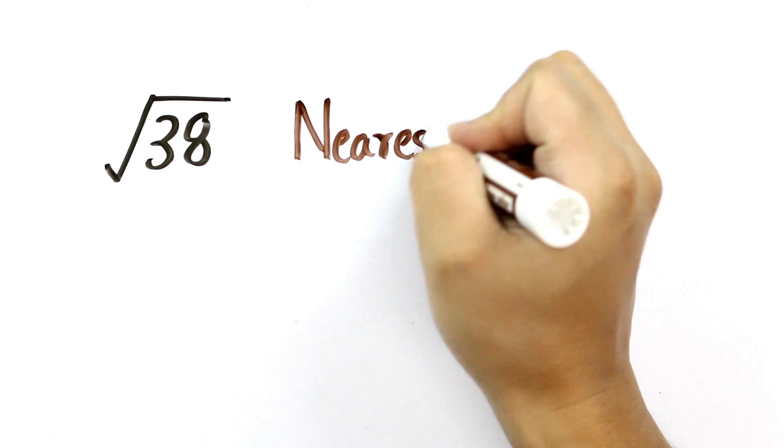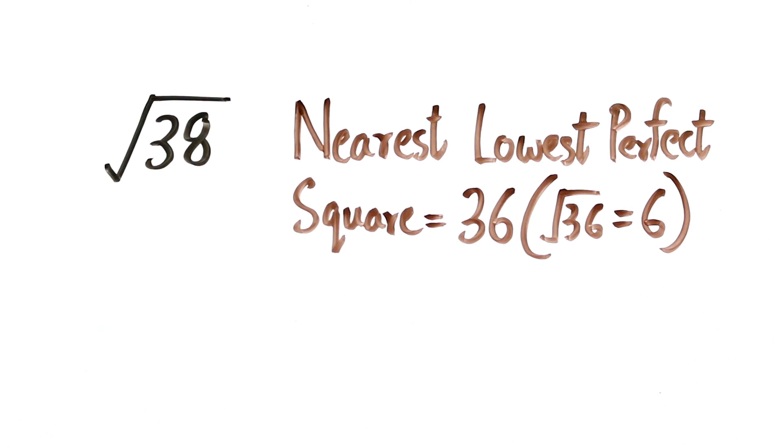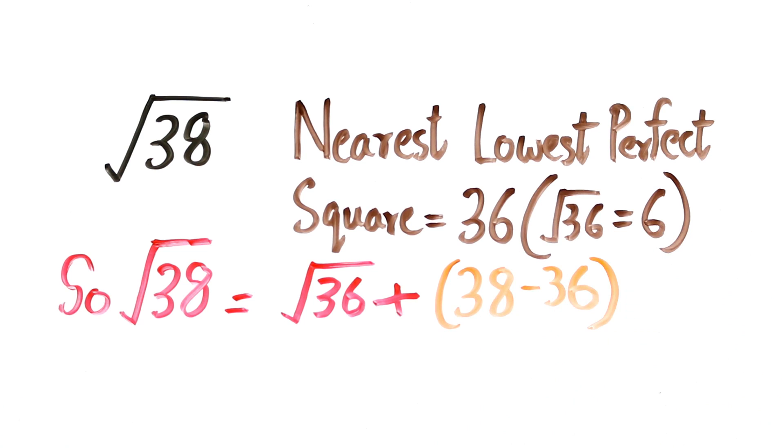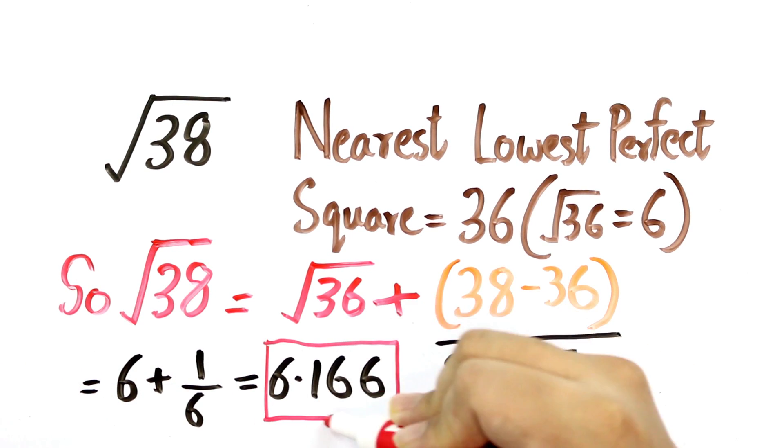So let's find out the square root of 38. Now the nearest lowest perfect square here is 36 and its square root is 6. So we'll put that in the formula. So our answer is 6 plus 38 minus 36 divided by 2 into 6 which is equal to 6 plus 1 by 6 and finally it is equal to 6.166.